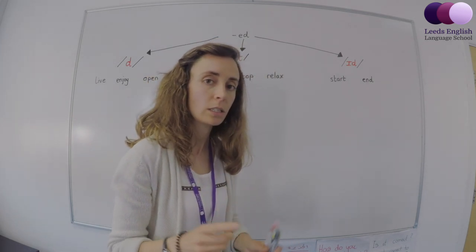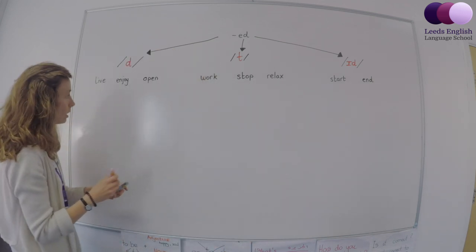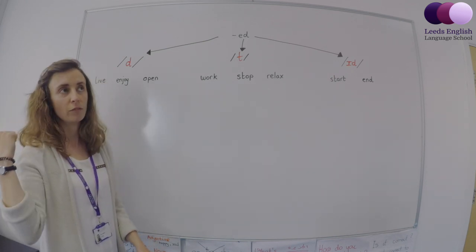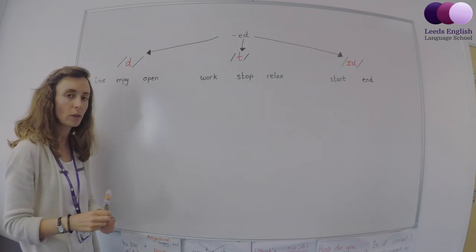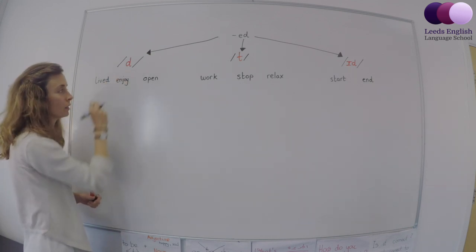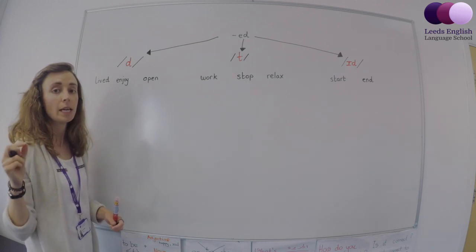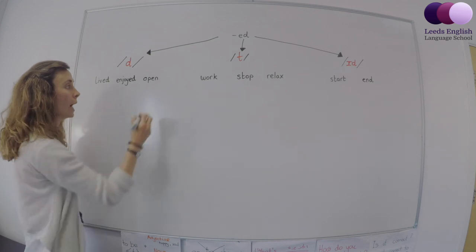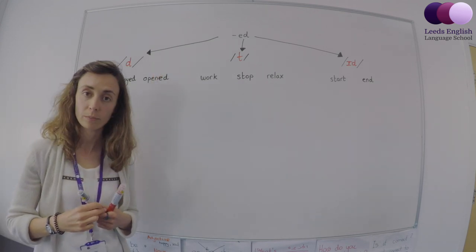So have a little listen to the way I pronounce these words. The first one, let's start with live. So we don't say lived. We say I lived in Bath. Have a go. Lived. And another one is enjoy. The past is enjoyed. Enjoyed. And opened.